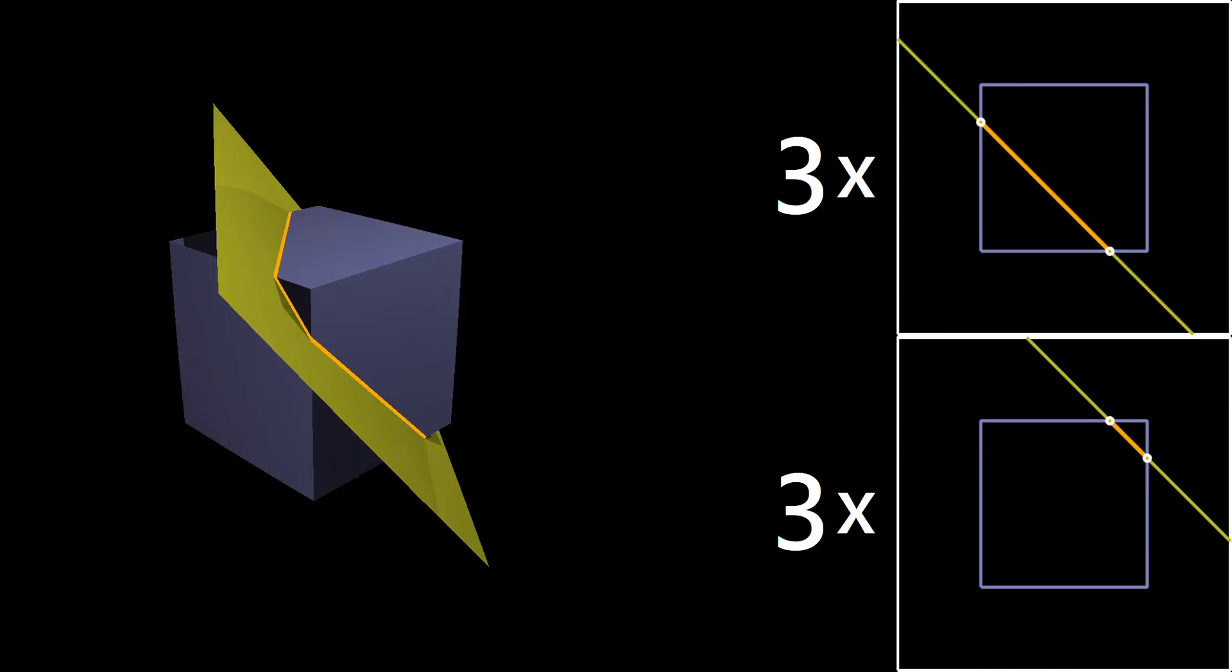So here we have a 3D cube. It's being intersected with a 2D plane. You can see I've highlighted in orange the intersection. And which plane is this? Well, it's the plane which is orthogonal to this normal vector, which I've drawn here.